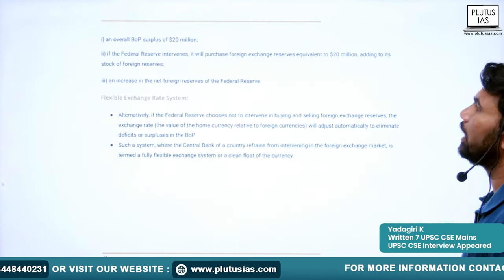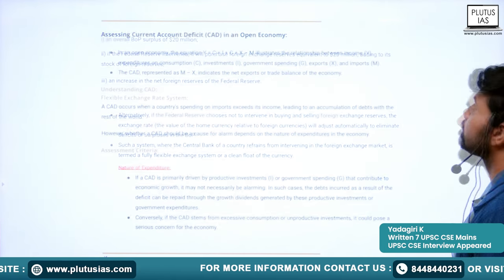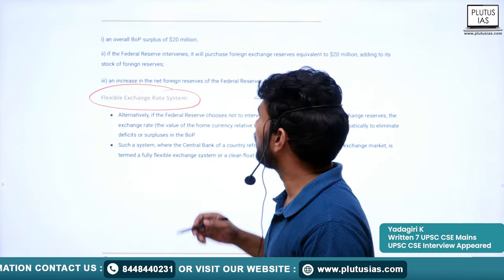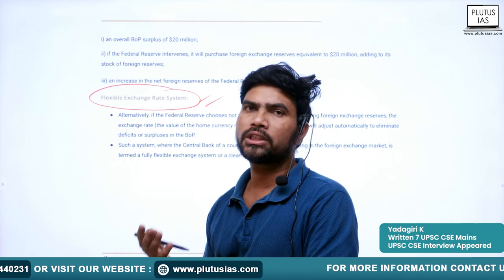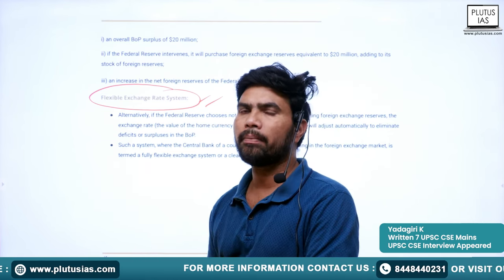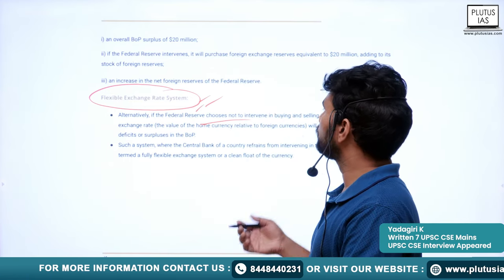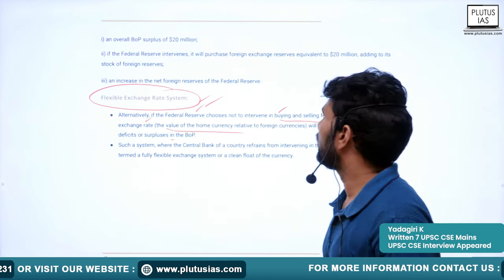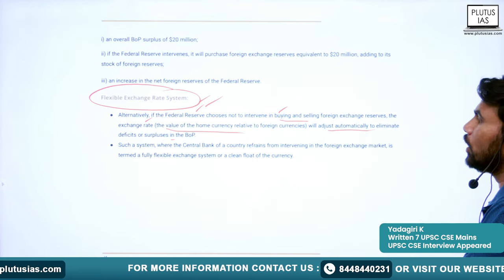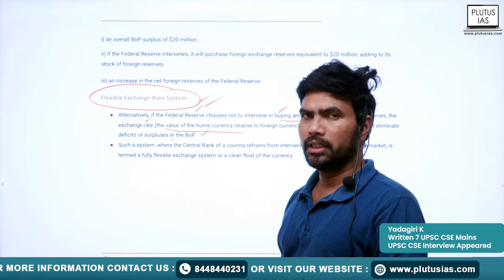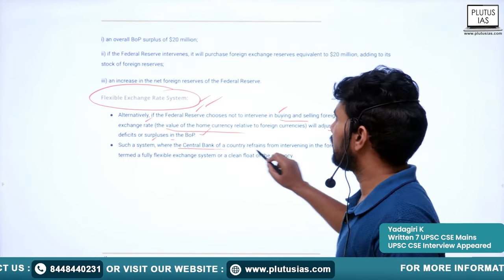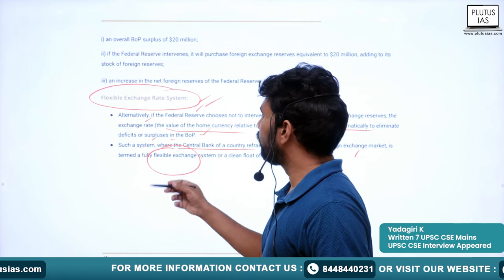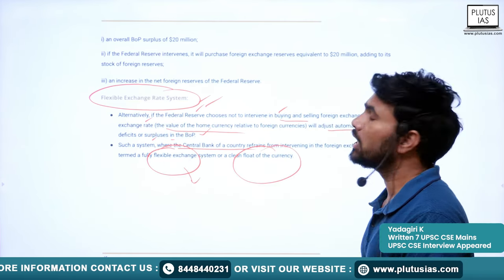This is about the RBI, foreign exchange, and the balance of payments. In certain cases, the central bank chooses not to intervene in transactions. When the central bank refrains from buying and selling foreign exchange reserves, the exchange rate adjusts automatically to eliminate deficits or surpluses in the balance of payments. Such a system where the central bank refrains from intervening in the foreign exchange market is termed a fully flexible exchange system or clean float of the currency.